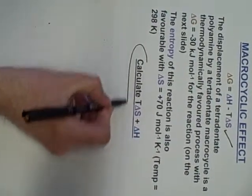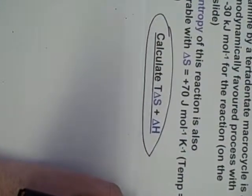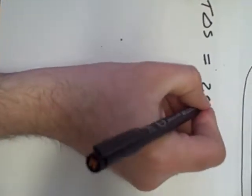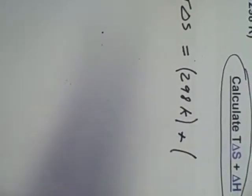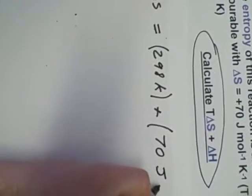So what we need to calculate is T delta S and delta H. So T delta S, relatively straightforward. Temperature, 298 Kelvin. I'm going to put brackets in this to avoid complications. Multiplied by delta S. There it is, 70 joules per mole per Kelvin.